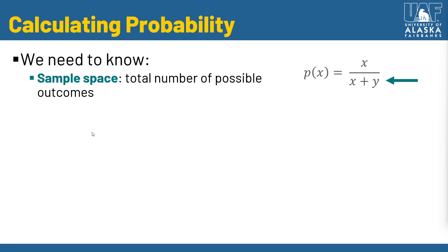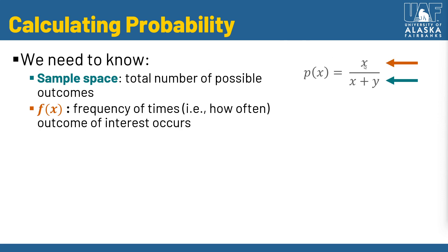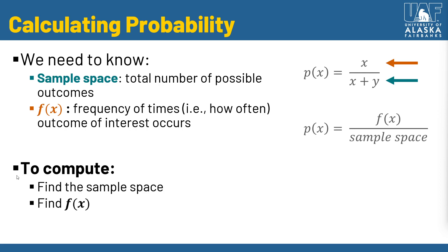In terms of calculating probability, the denominator — x plus y, all the possible outcomes — is called the sample space. The numerator, often notated as f(x), is the frequency of times an outcome of interest occurs. So P(x) equals f(x) divided by the sample space. To compute probabilities, we just need to find the sample space, find f(x), and carry on with the math.